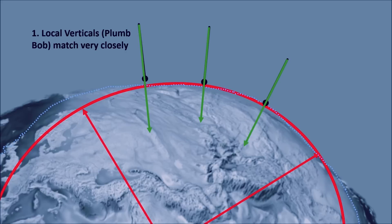You see the local verticals match very closely and there is not much of a difference between geoidal and ellipsoidal surfaces.